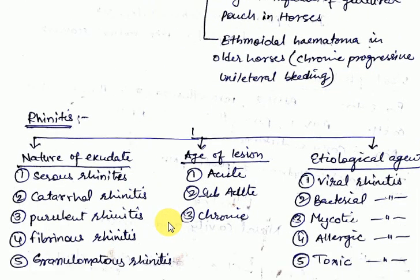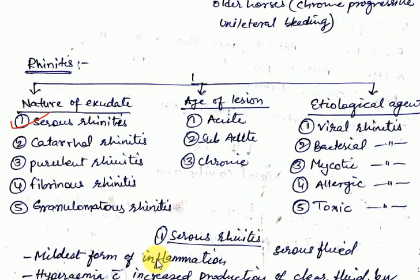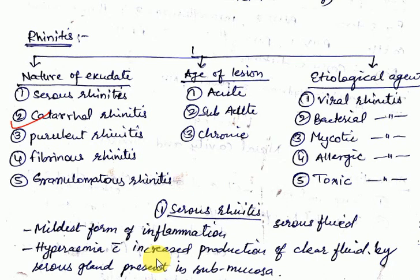Inflammation of the nasal mucosa is called rhinitis, and that of the sinuses is called sinusitis; they usually occur together. We are now studying about rhinitis, which will be covered in detail in the next lecture. Thanks.